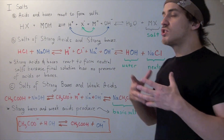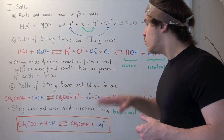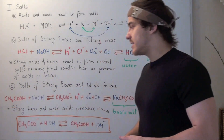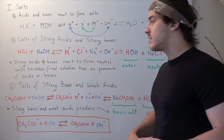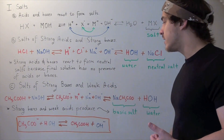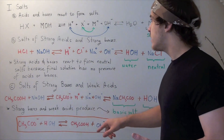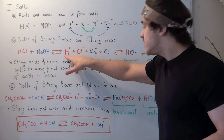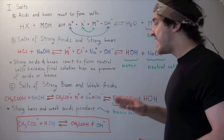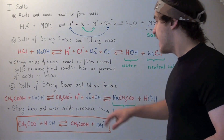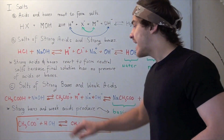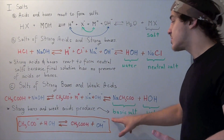Now let's see what types of salts are formed when strong bases and weak acids react. Acetic acid, a weak acid, and sodium hydroxide, a strong base, dissociate into acetate ion, H+ ion, sodium ion, and hydroxide ion. The H+ and hydroxide form water, while the acetate ion and sodium form a basic salt. So strong bases and weak acids produce basic salts.